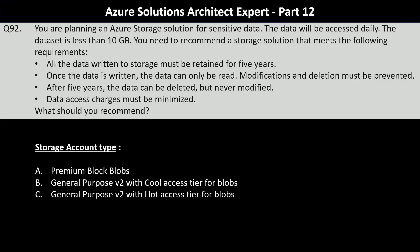For the storage account type, your options are premium block blobs, general purpose V2 with cool access tier for blobs, or general purpose V2 with hot access tier for blobs. The correct answer is option C — general purpose V2 with hot access tier. The hot access tier provides lower data access costs compared to the cool access tier, making it more suitable for minimizing charges. The cool tier has higher data access charges, and premium block blobs are meant for high-performance scenarios.